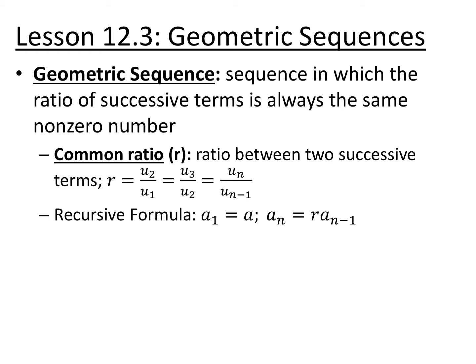A geometric sequence is a sequence in which the ratio of successive terms is always the same. Arithmetic sequences, you're adding the same thing every single time. Geometric sequences, you're multiplying by the same thing every single time. That ratio, we call it a common ratio, and we use the letter R to represent it. You can find it by finding the ratio between any successive terms: u₂ divided by u₁, u₃ divided by u₂, u_n divided by u_{n-1}.